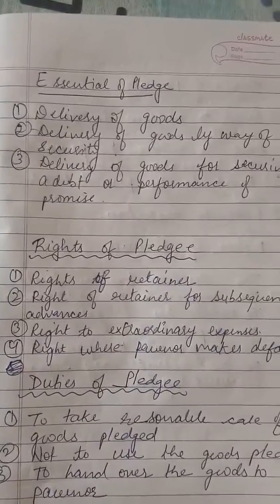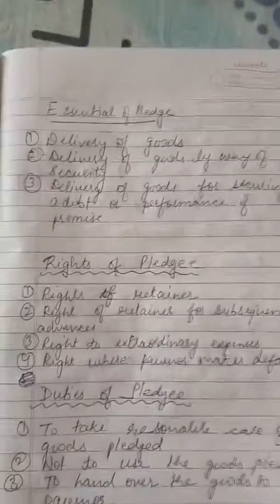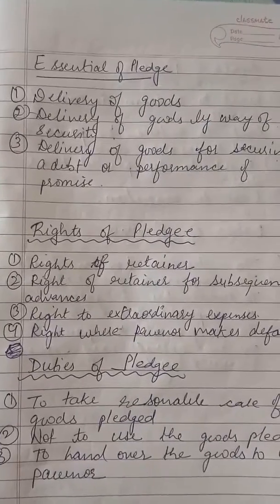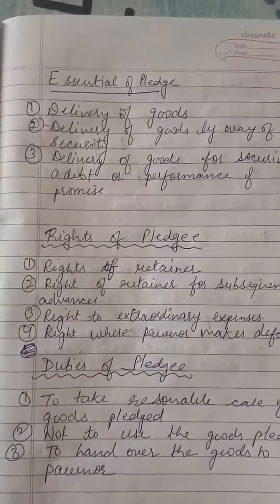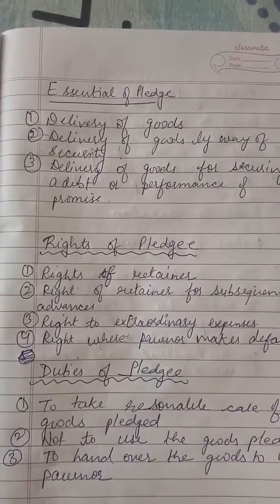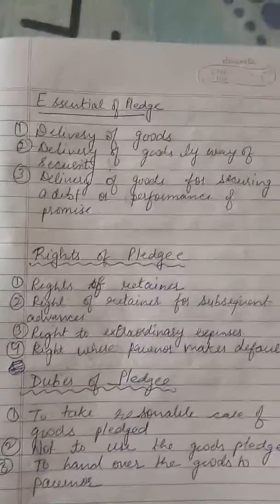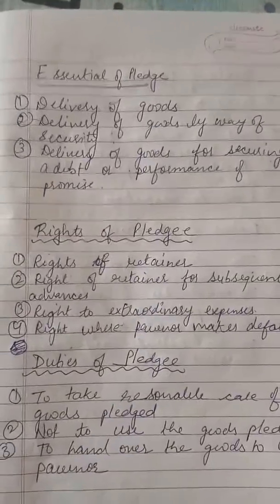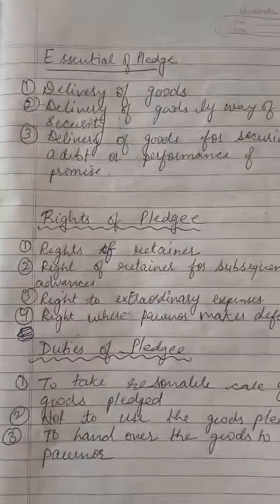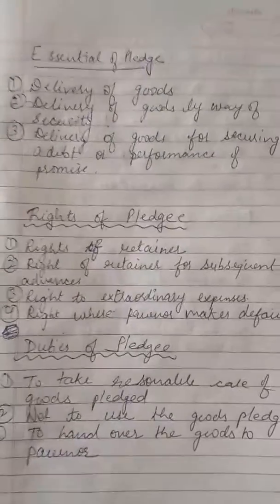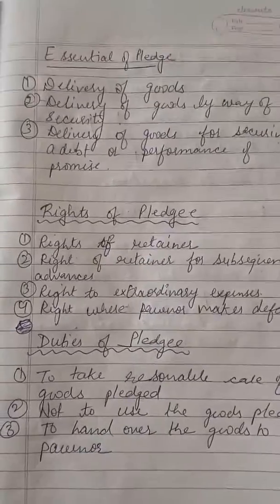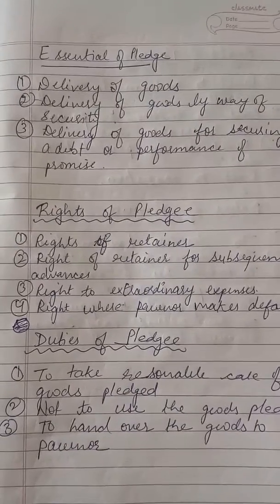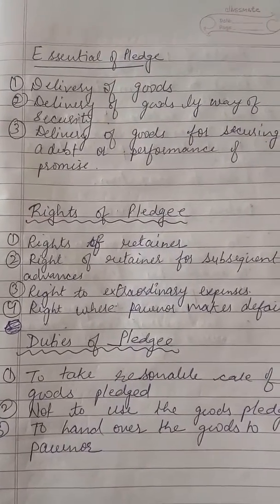Now let's move towards the essentials of the pledge. Pledge और bailment almost same हैं - pledge is a special kind of bailment itself. First essential is the delivery of the good - इसमें goods को deliver करना पड़ता है.